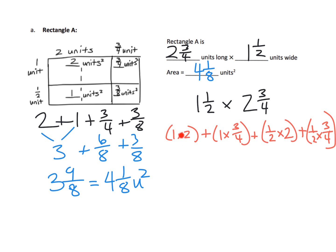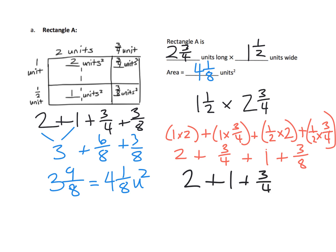We've got four multiplication problems, and that's why these are called partial products. One times two is two. One times three fourths is three fourths. A half times two — one times two is two over two, which is one. And then one half times three fourths is three eighths, because one times three is three and two times four is eight. Using the commutative property, I could do two plus one plus three fourths plus three eighths, and I get the exact same thing using the geometry.